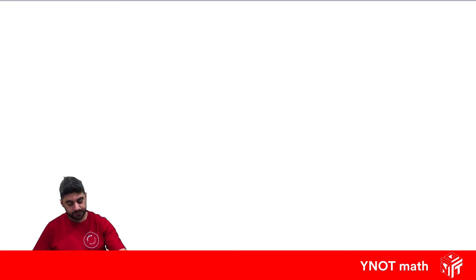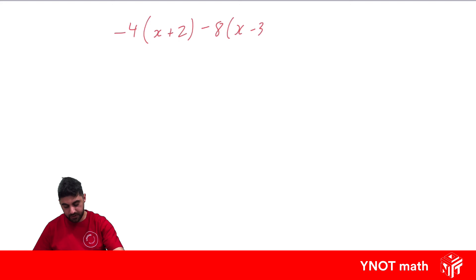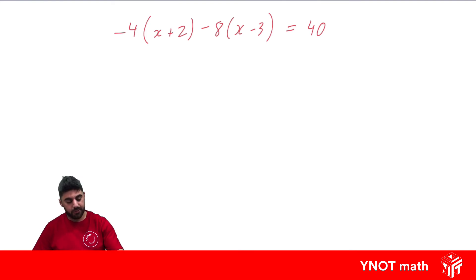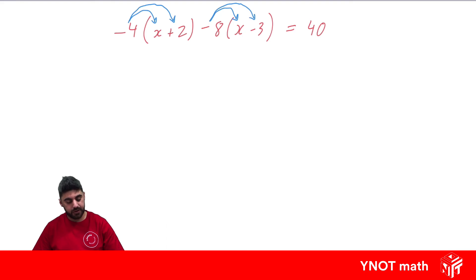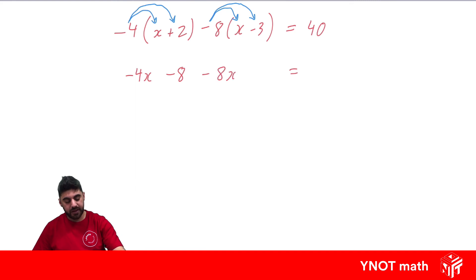Now we're going to look at a really hard example: negative 4 outside of x plus 2, minus 8 outside of x minus 3, equals 40. We've got two brackets to expand. Negative 4 times x is negative 4x, negative 4 times positive 2 is negative 8, negative 8 times x is negative 8x, and negative 8 times negative 3 is positive 24. That all equals 40.